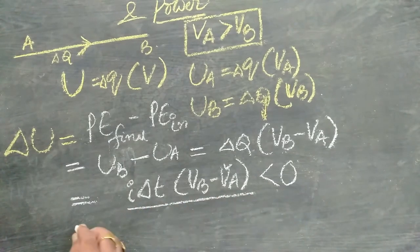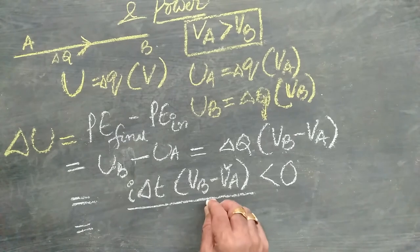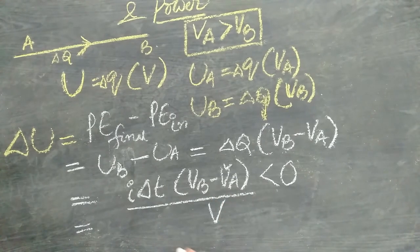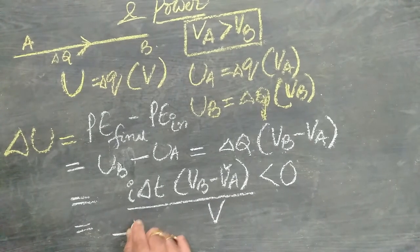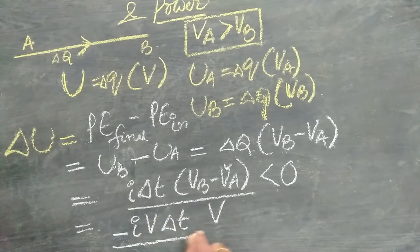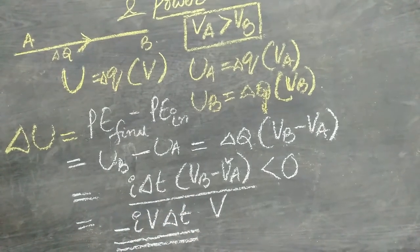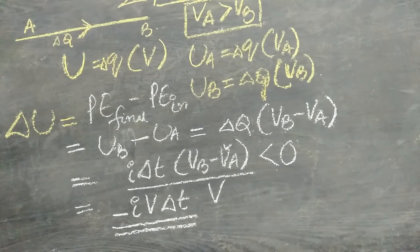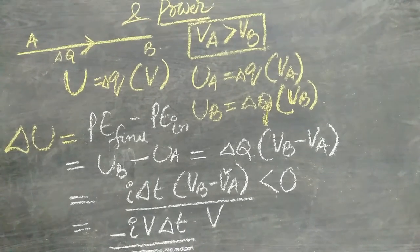So potential energy is, if I consider that this difference is V, then minus I V delta T. So we calculated the potential energy difference when the current is passing through a conductor. So far, so good.